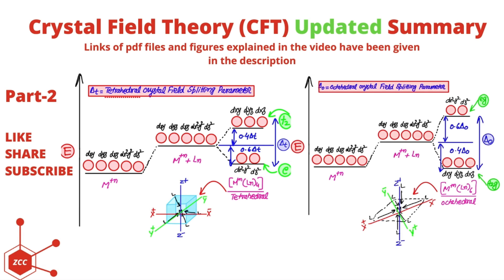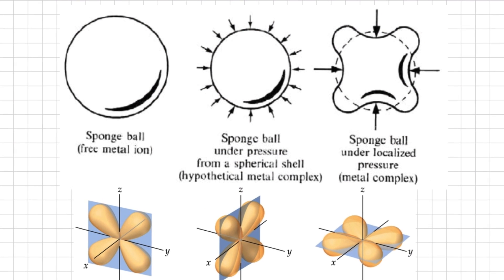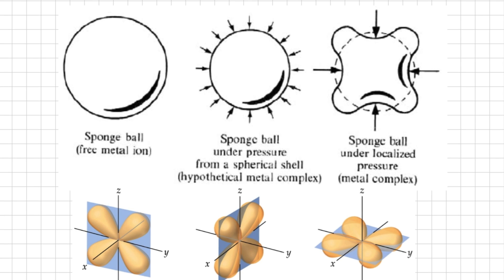In the previous lecture we discussed an analogy in which a sponge ball represents the metal ion and ligands are attracted towards it, putting pressure on it. As a result, the sponge ball deforms and two regions are found: one region of high energy and another of low energy. Similarly, when ligands approach the metal ion, the d orbitals split into high energy and low energy levels.